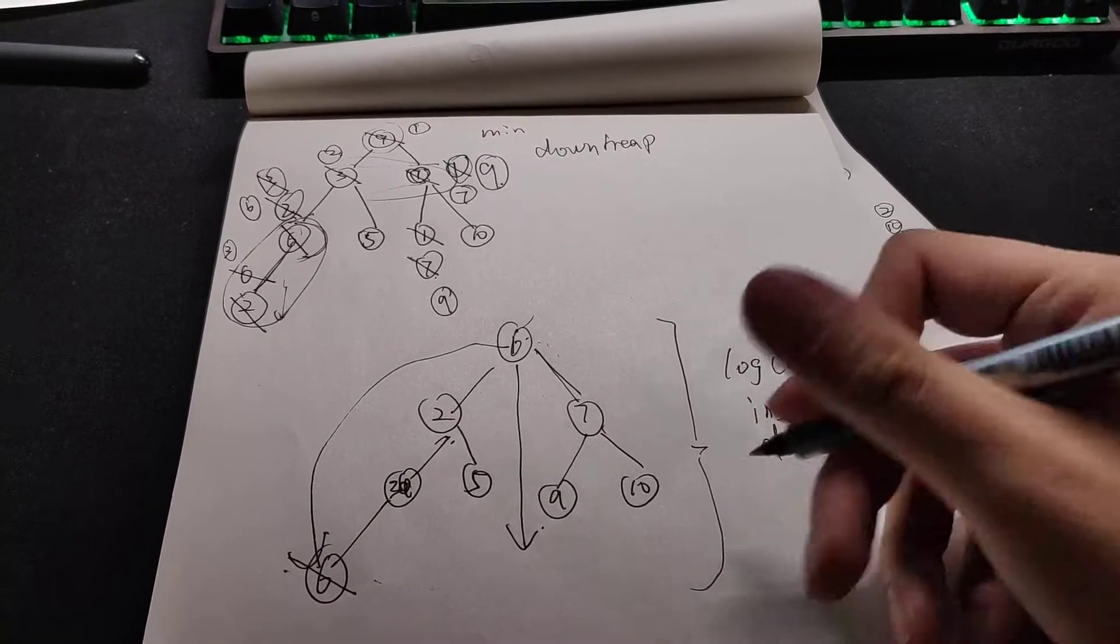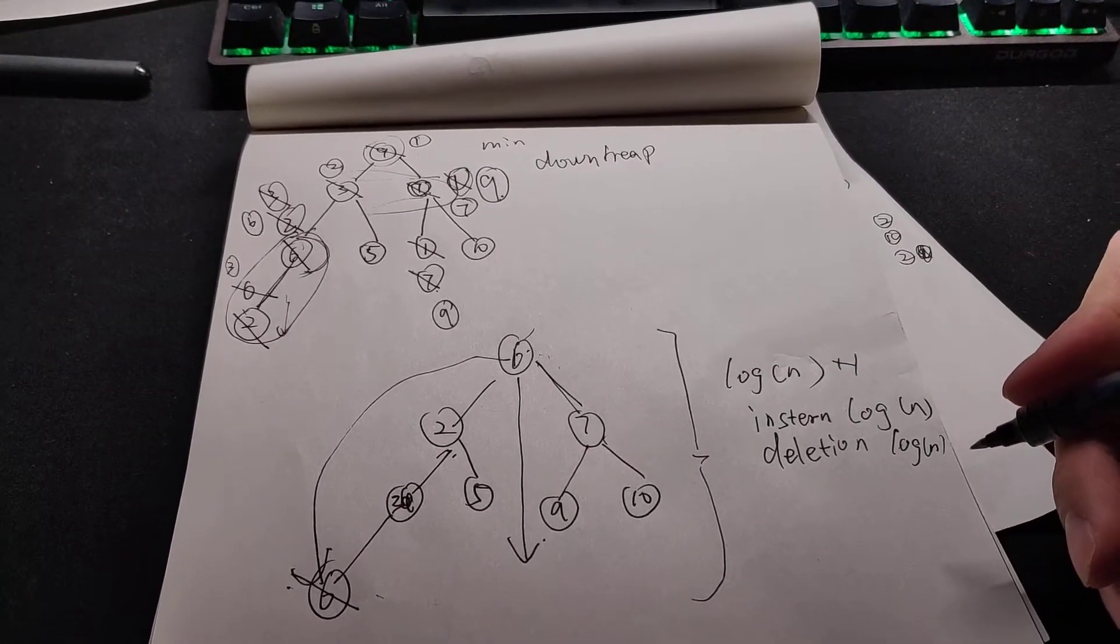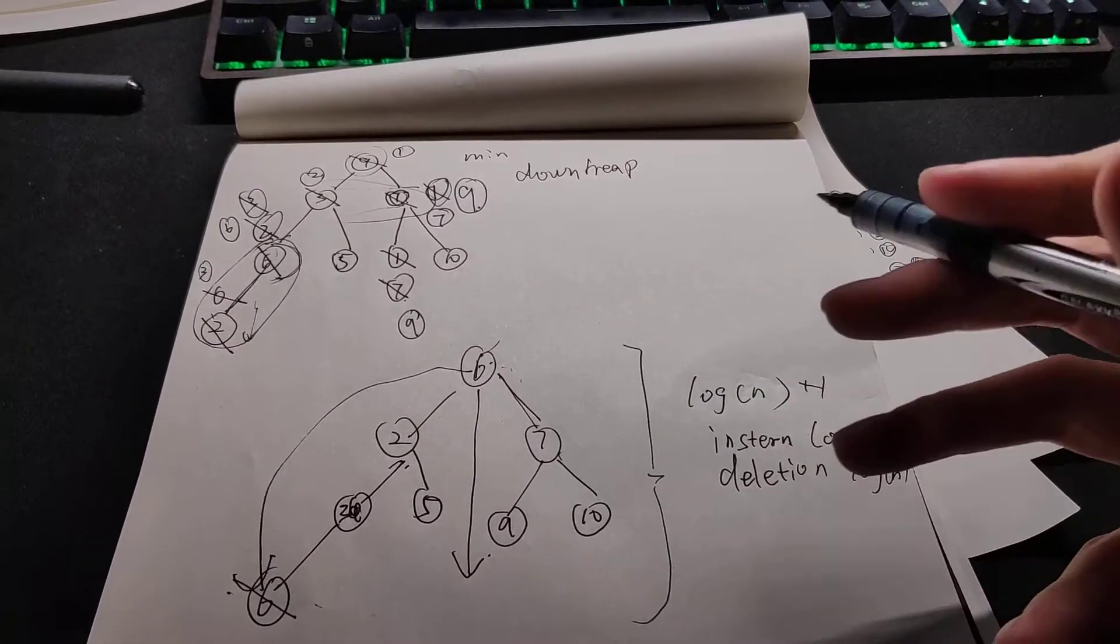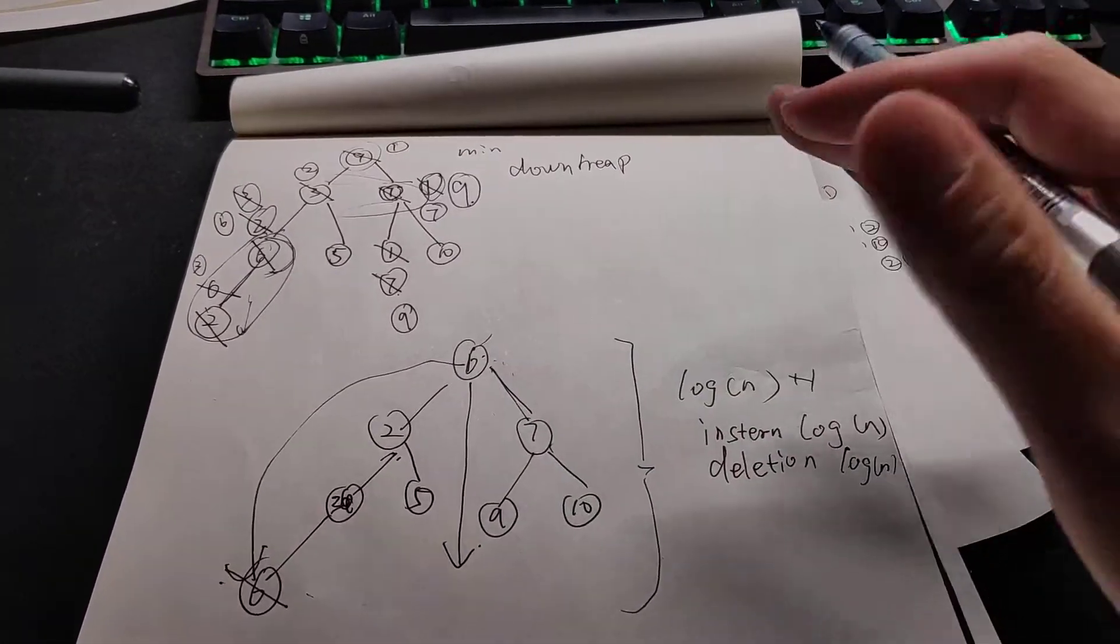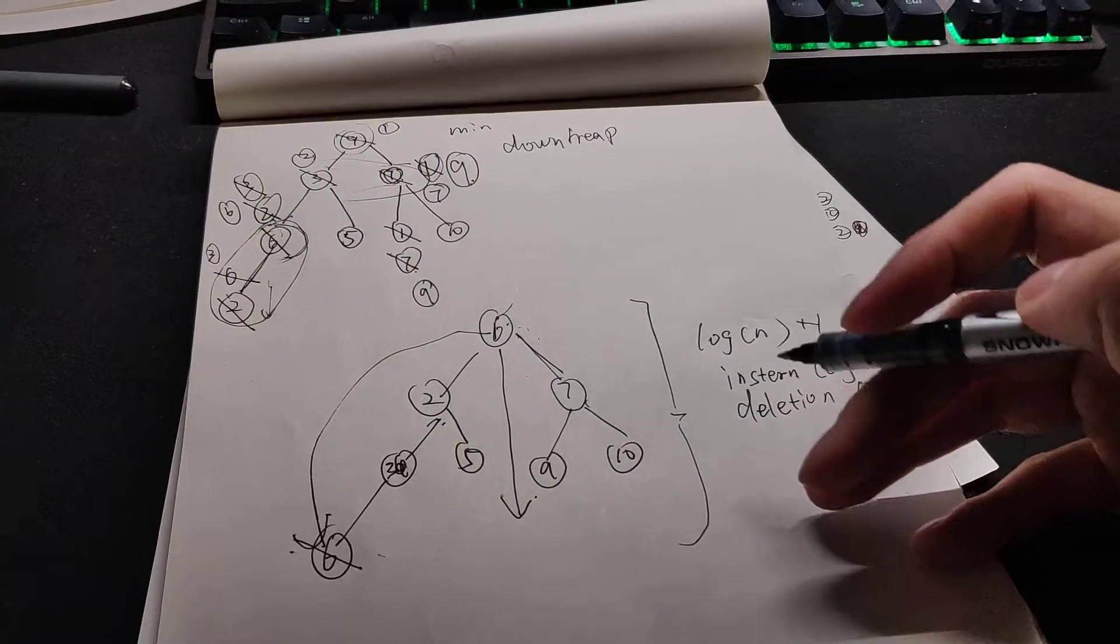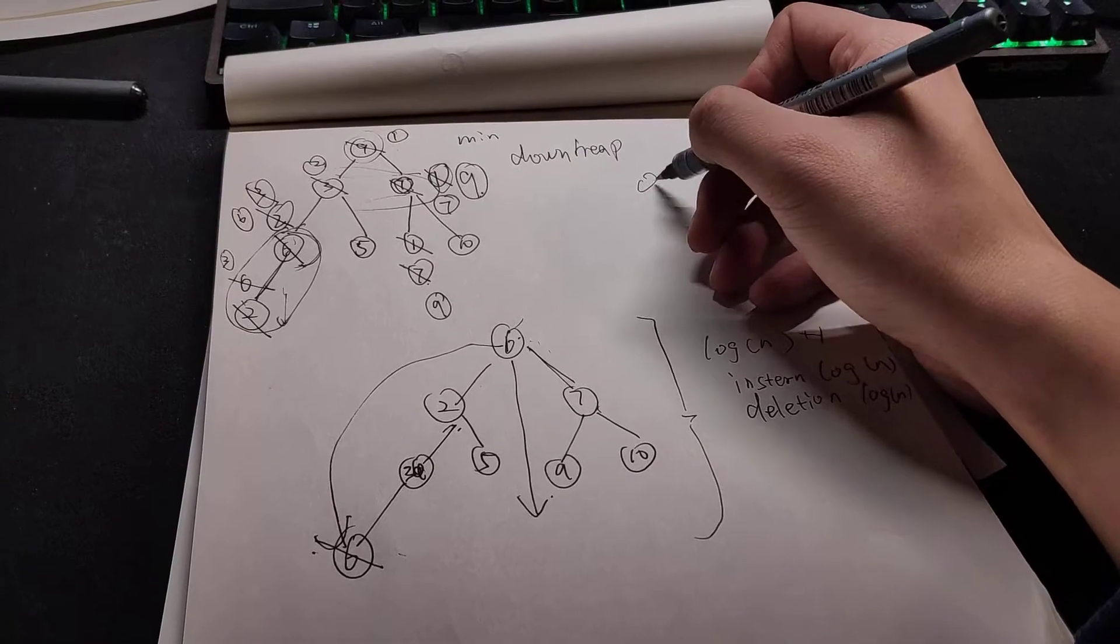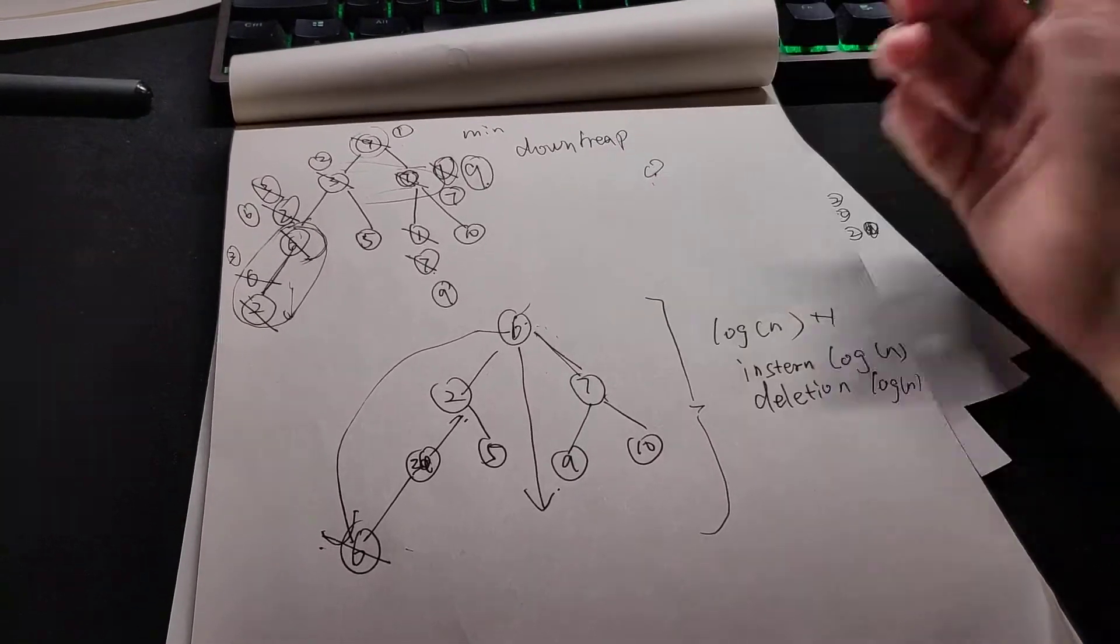And for the build heap, there are two ways of the build heap. The first way is we just build one heap by given array, just like what I do here. And another way is build an empty heap and then insert the element one by one.